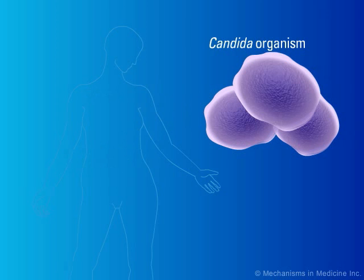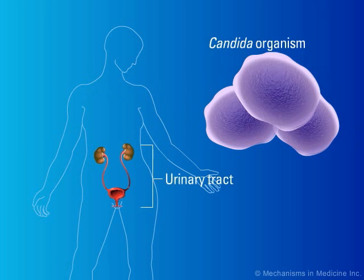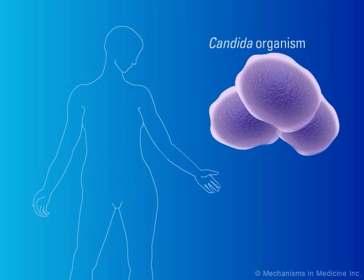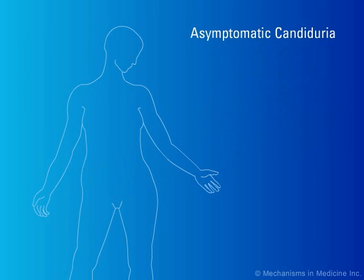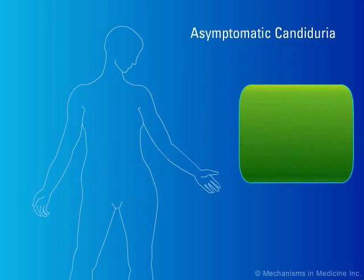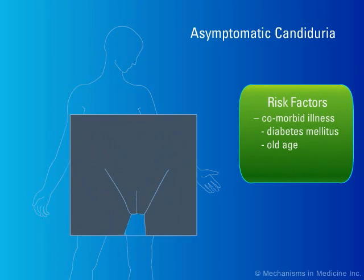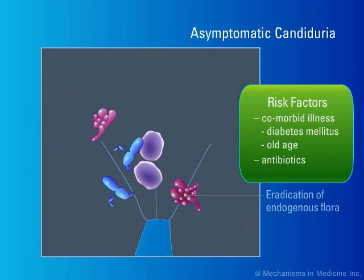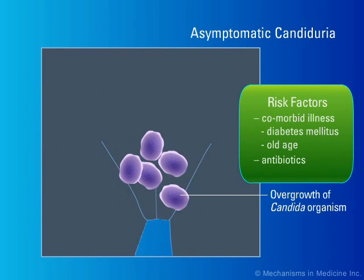Candiduria can affect different sites of the urinary tract and can be associated with several risk factors. Most patients with candiduria are asymptomatic. Asymptomatic candiduria often results from a combination of factors including comorbid illness, diabetes mellitus or old age, antibiotics that eradicate the endogenous flora, allowing for the overgrowth of candida organisms, and catheter use.